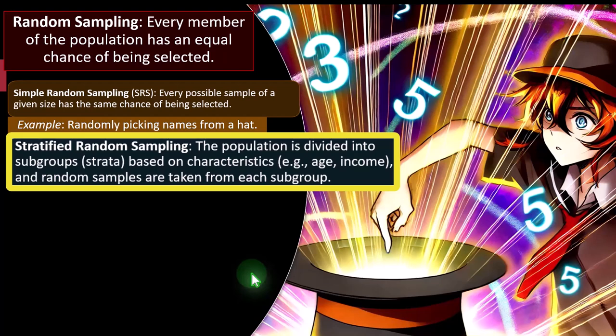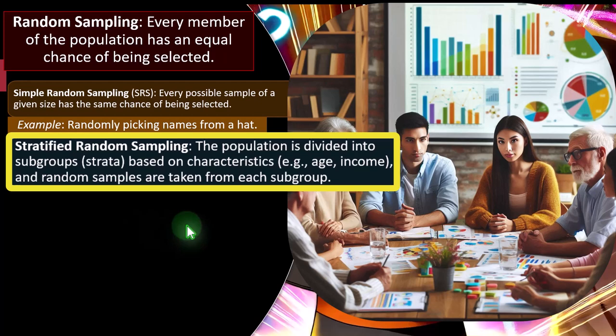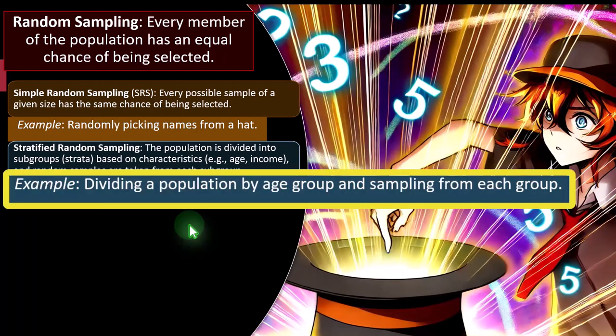Stratified random sampling still has a component of randomness, but the population is divided into subgroups called strata based on characteristics like age or income. Random samples are then taken from each subgroup. You can think of it as doing multiple random samples — breaking the population into groups such as age or income, then taking random samples from each subset. Example: dividing a population by age group and sampling from each group.